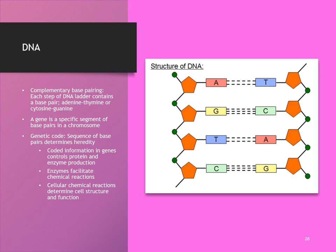Remember that DNA has complementary base pairing — adenine pairs with thymine and cytosine pairs with guanine in DNA. Genetic code performs a variety of functions: it can code information in genes to control proteins, enzyme production, and cellular chemical reactions that determine cell structure and function.